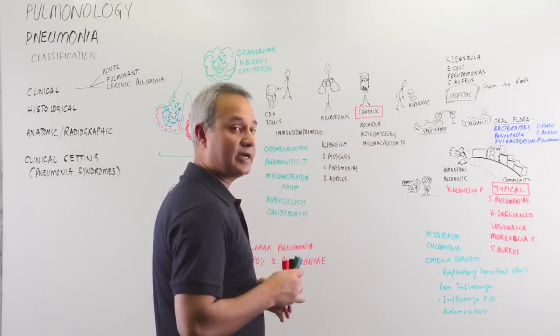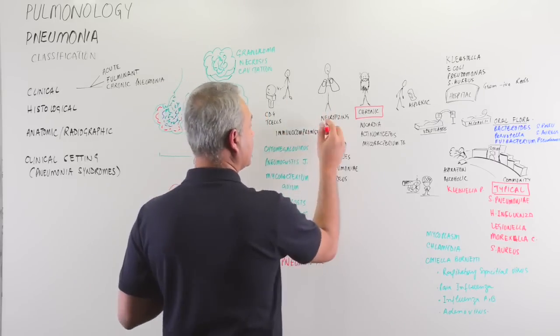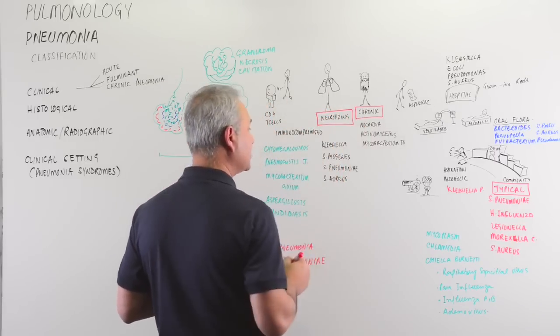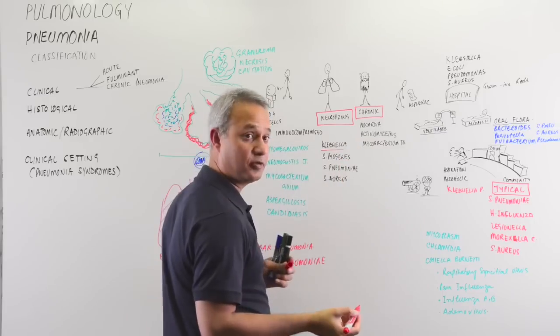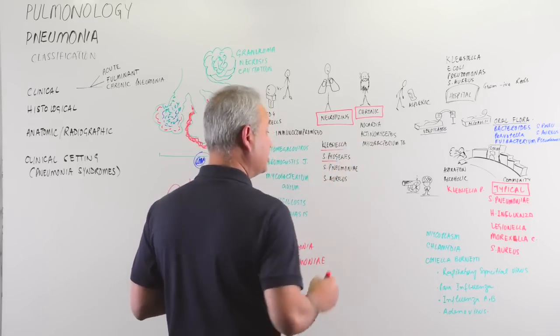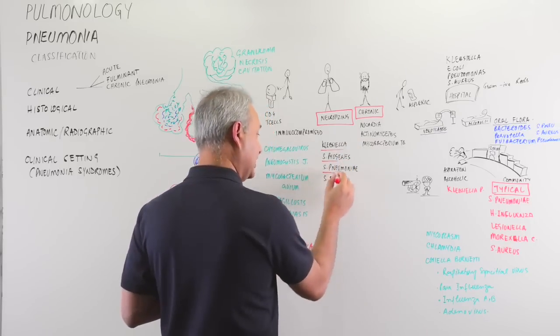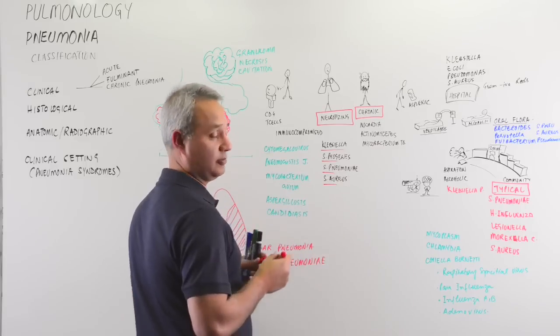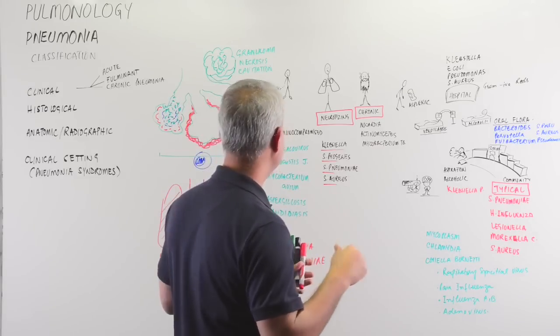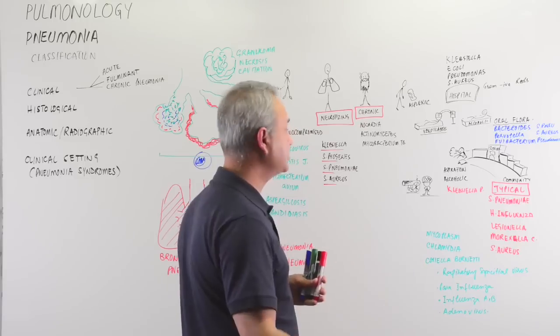Then specifically necrotizing pathogens that can cause necrosis: Klebsiella is very important, Streptococcus pyogenes is very important, pneumonii is very important, and Staph aureus is very important. These can cause necrosis and then cavitation.